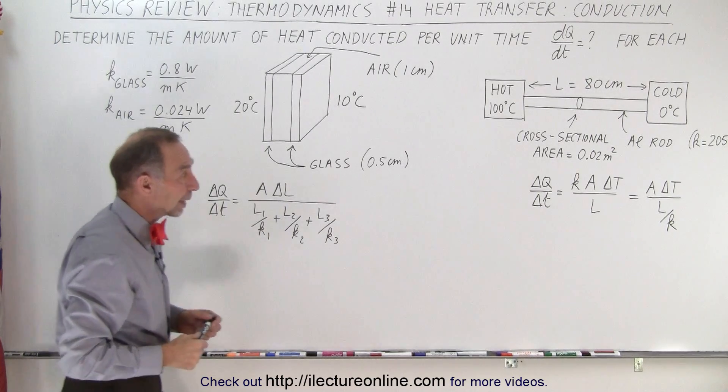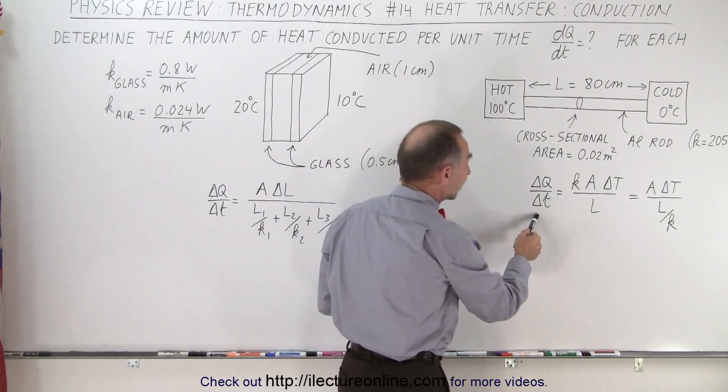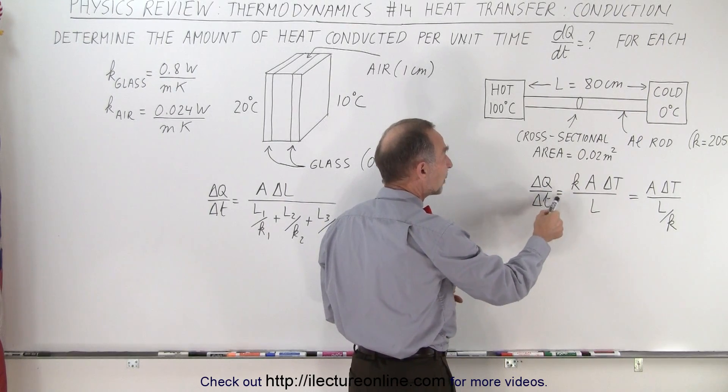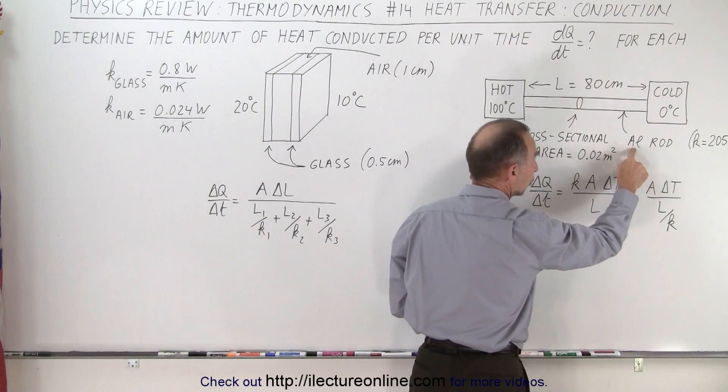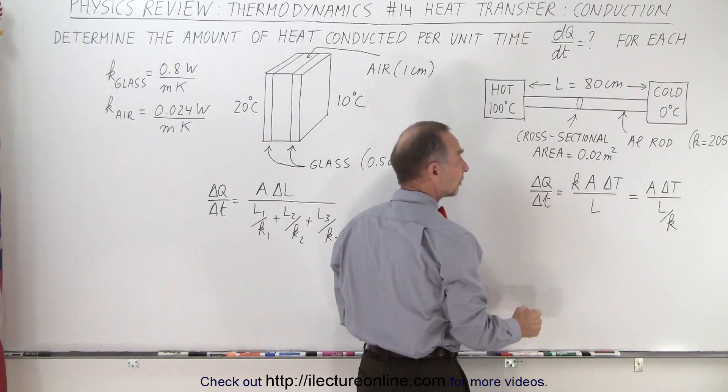How do we do that? Well we have the equation that tells us that the amount of heat transfer per unit time depends upon the heat conductivity constant for aluminum. It is 205 watts per meter per kelvin.